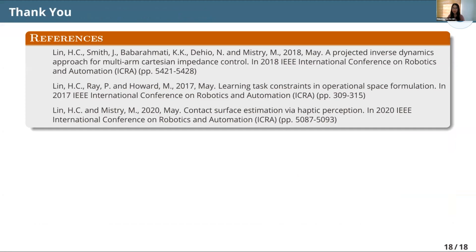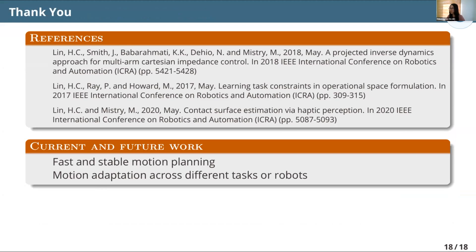Lastly, most of this work was done during my postdoc at the University of Edinburgh. I recently started a new position at McGill University, where I'm continuing work on legged locomotion, but my current focus is more on motion planning — how to do motion planning in a faster and more stable way, either through optimal control or through machine learning. Another research area I'm working on is motion adaptation, not just across different tasks, but potentially across different robots as well.